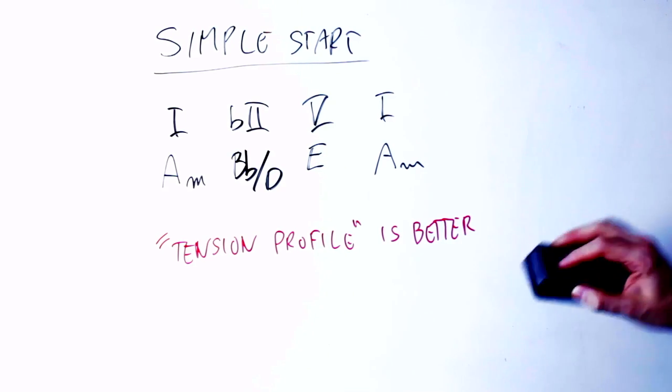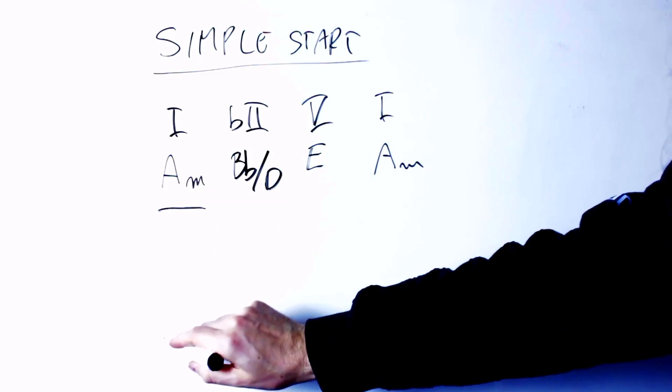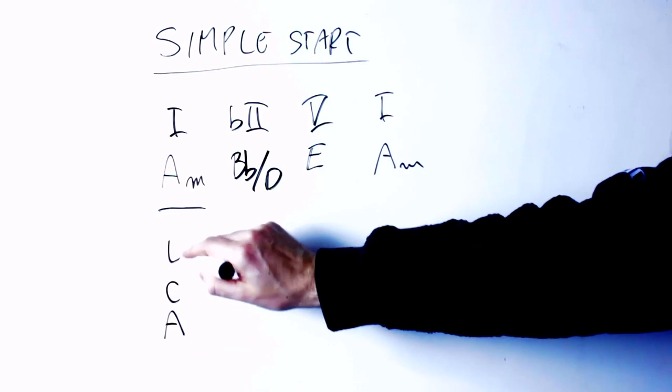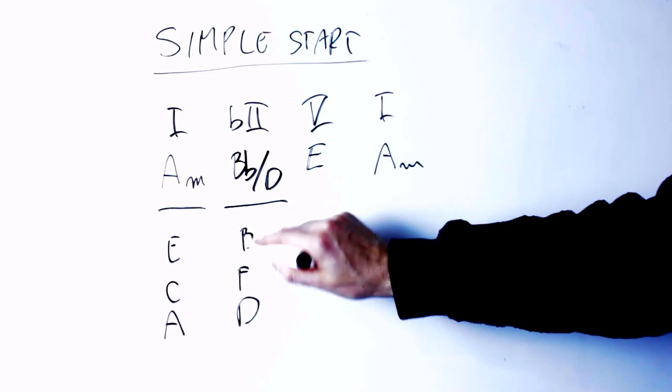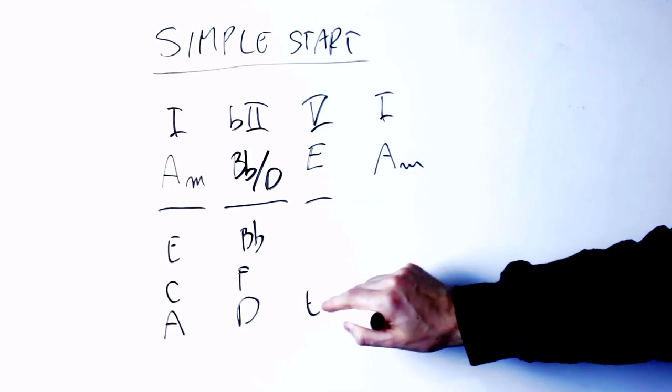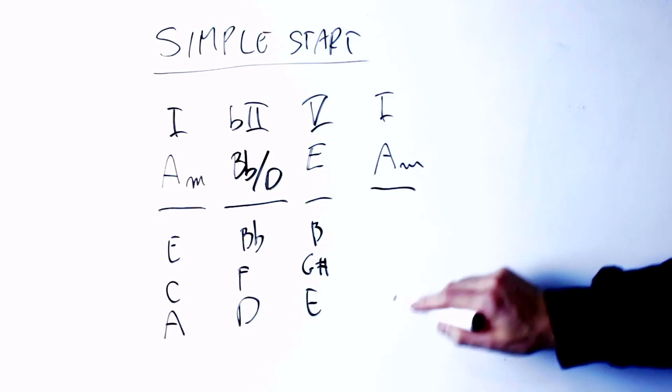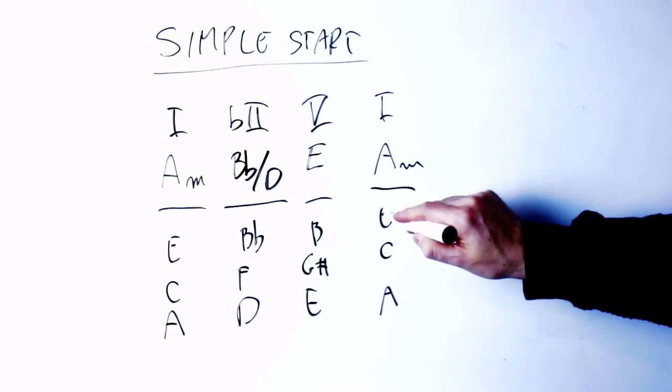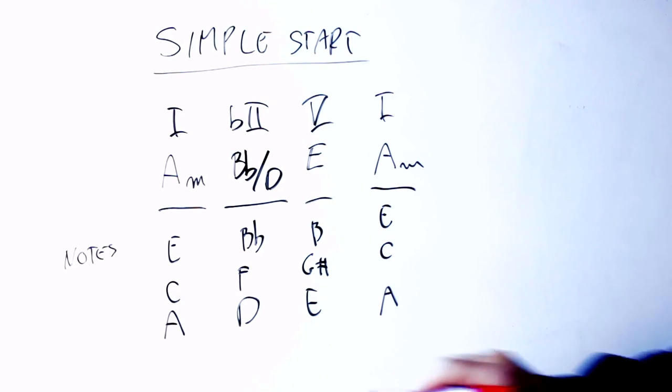But there is more to it than that. If we write down the notes in every chord, we notice a very interesting thing, because you see, the Am chord has notes A, C, E. The Neapolitan chord, again, it's D, F, Bb. The E, taken from the harmonic minor, the E major, it's E, G sharp, B. And then, all these resolve again to the Am chord A, C, E.